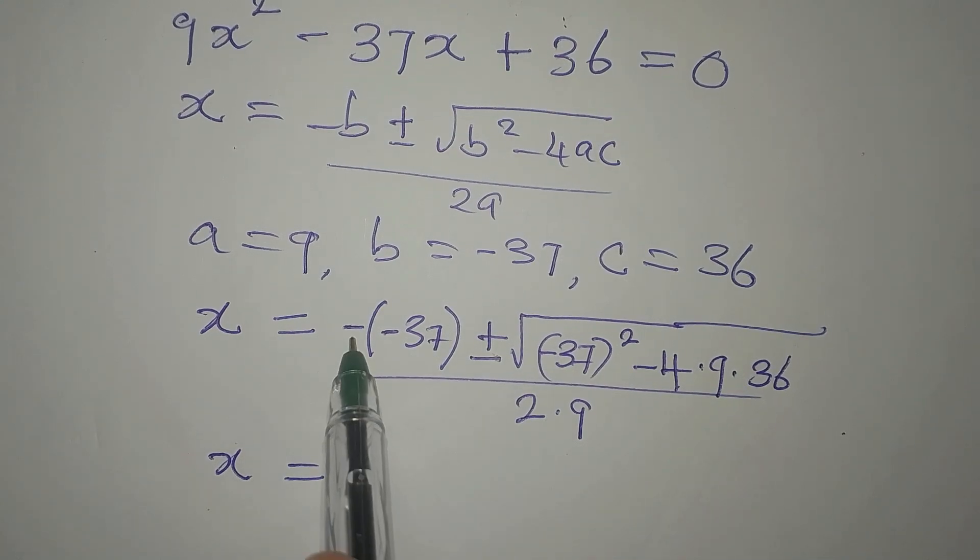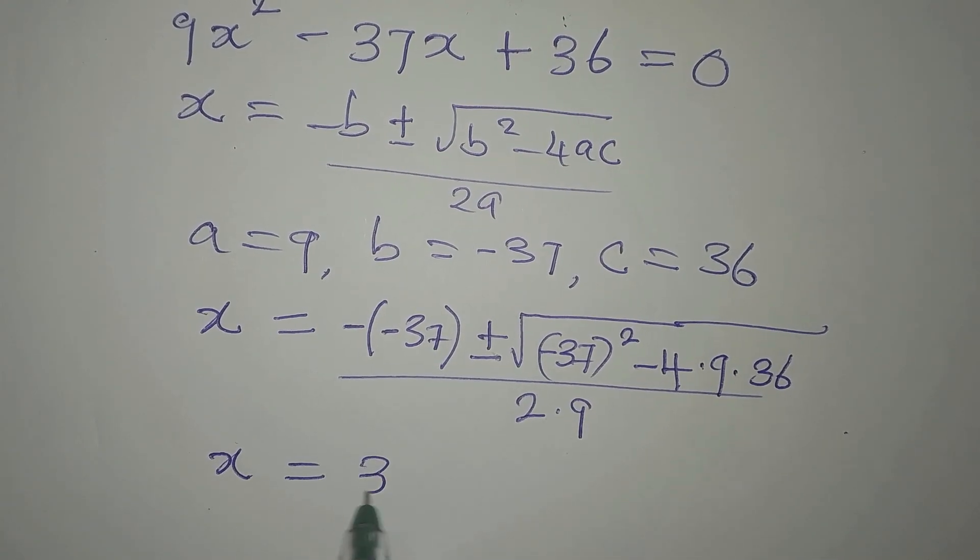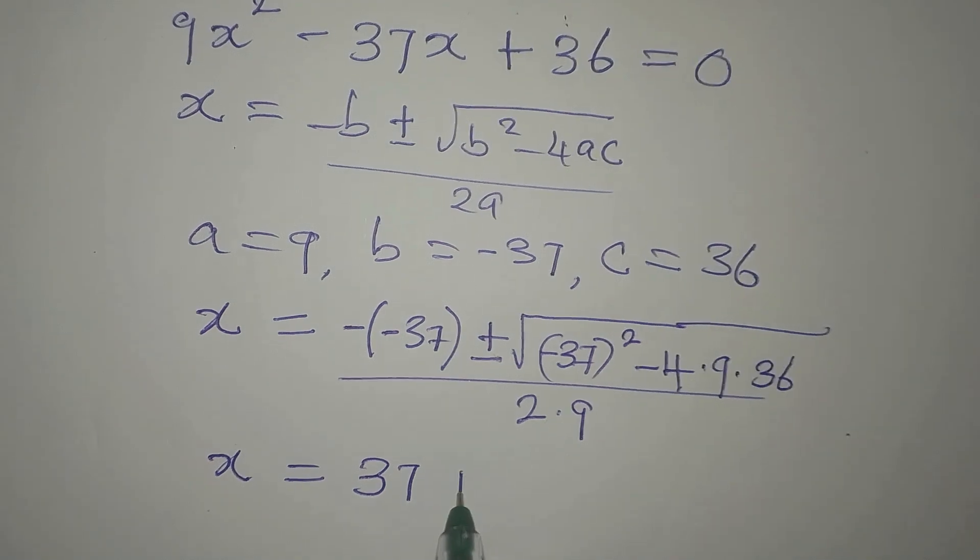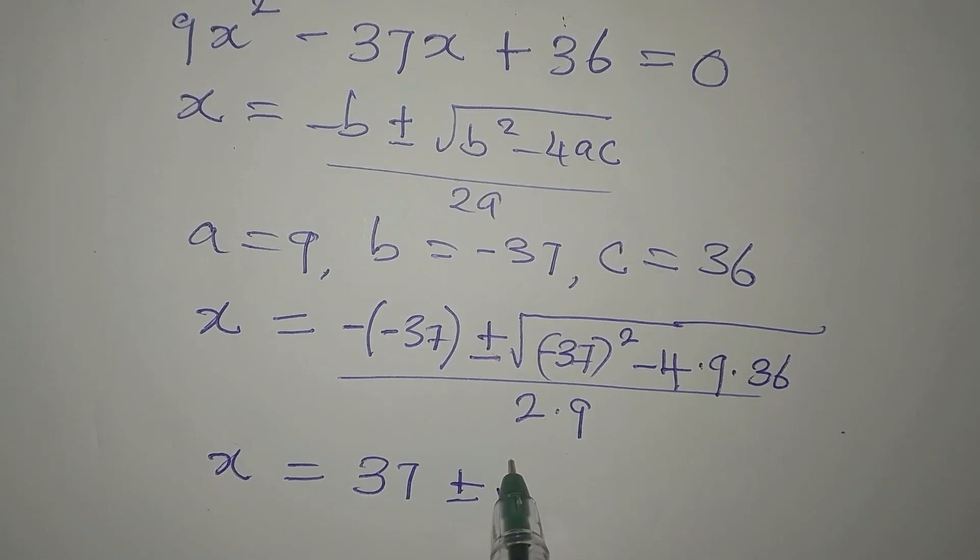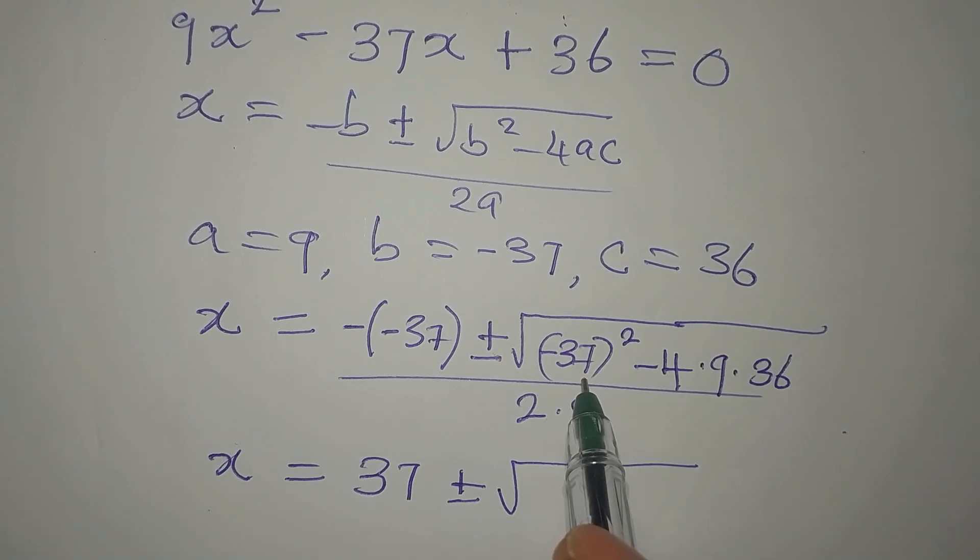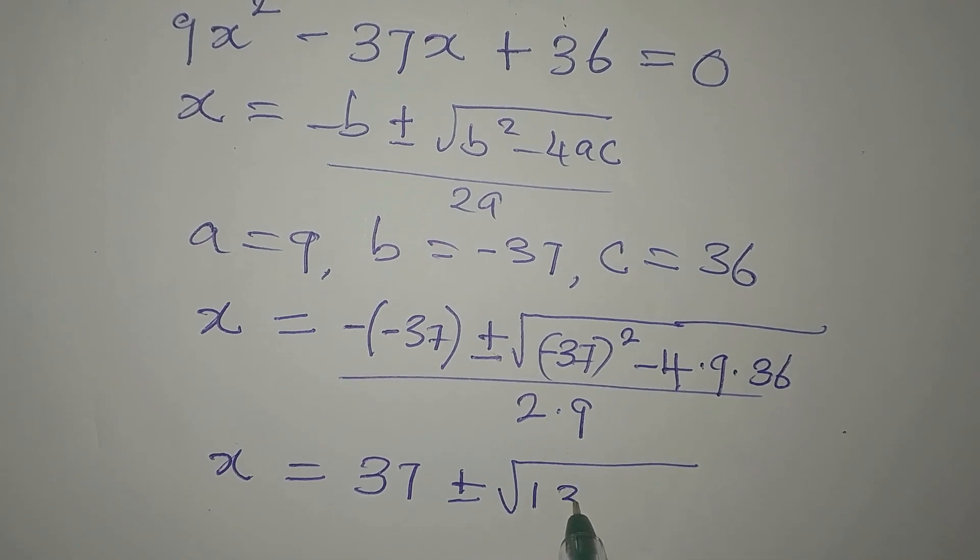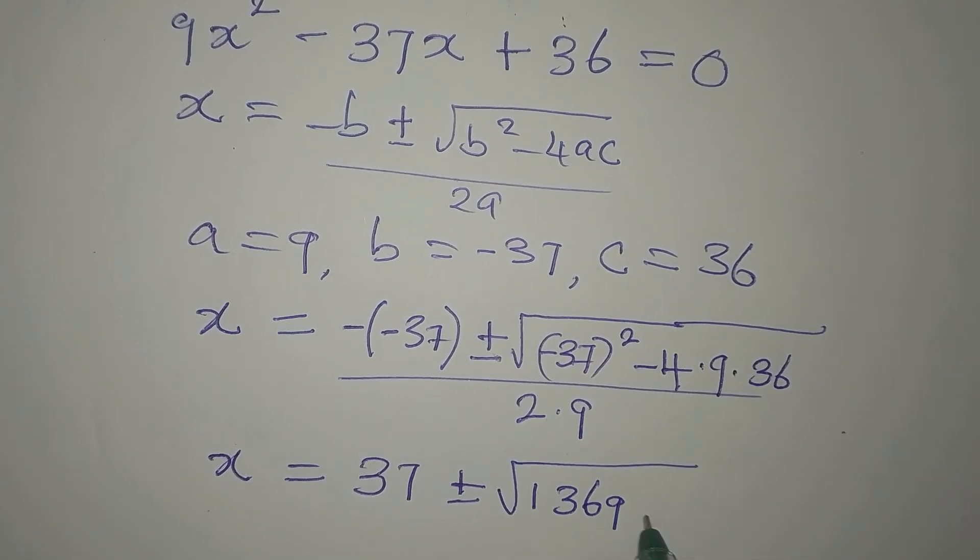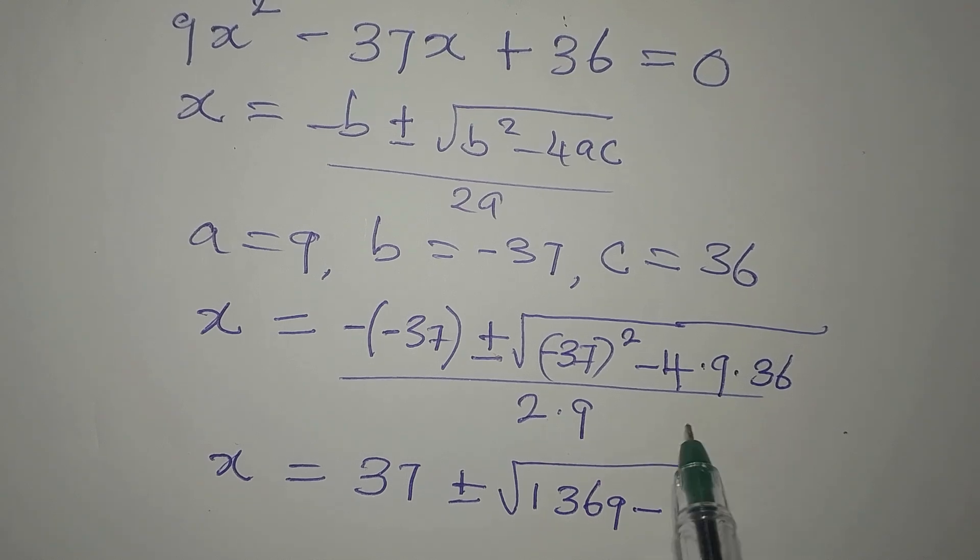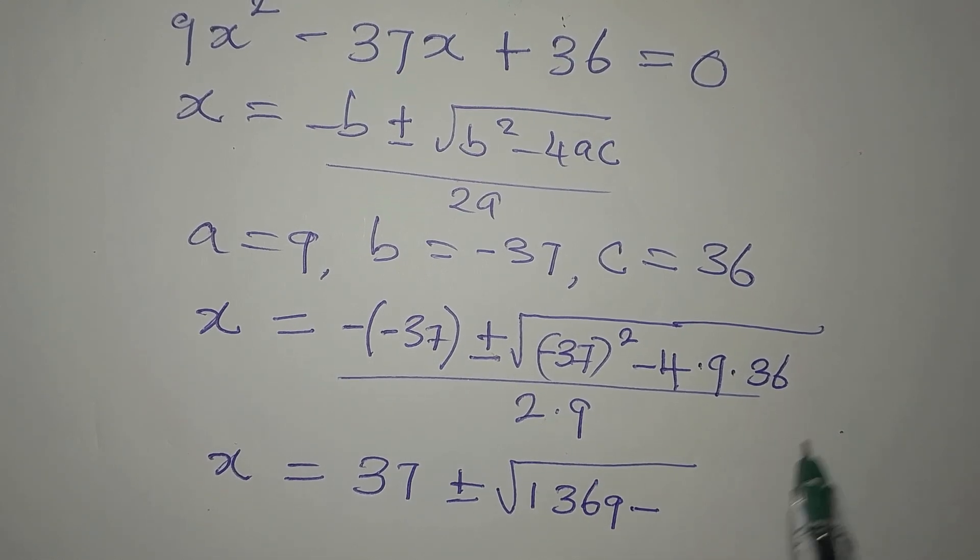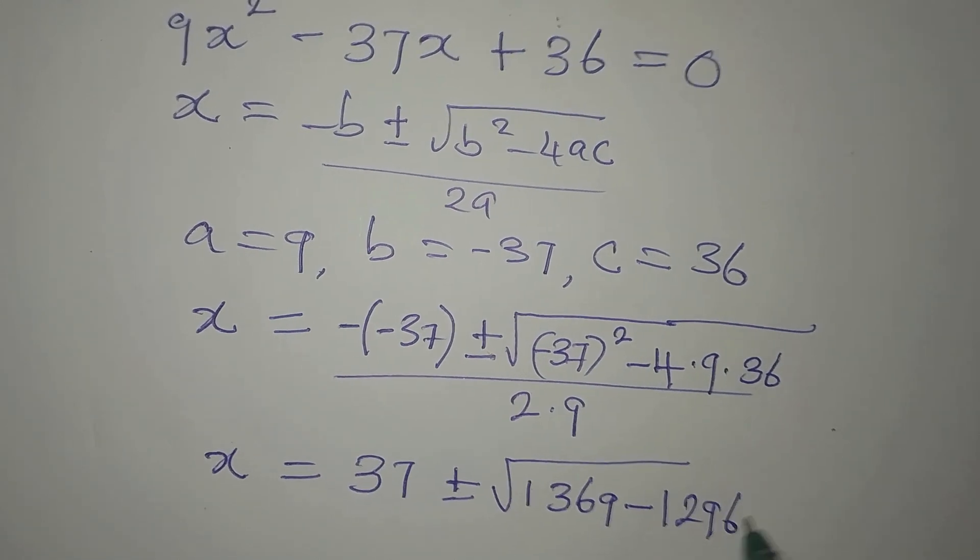Now, x now will be negative times negative is positive. We'll now write 37 plus or minus. 37 squared is 1,369 minus 4 times 9 is 36. 36 times 36 is 1,296.